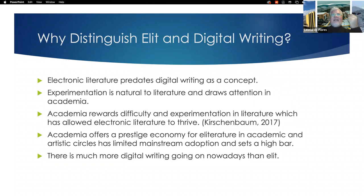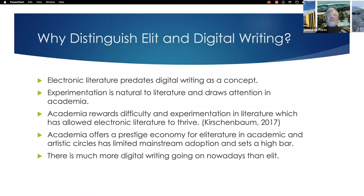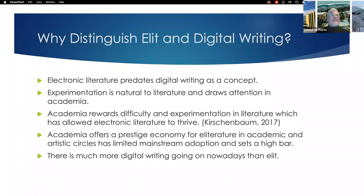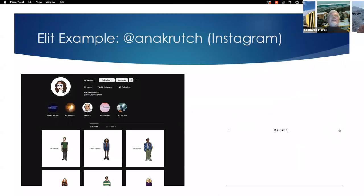Experimentation is natural to literature and draws attention in academia. Matthew Kirshenbaum made this excellent point in a keynote at the ELO conference in Porto, Portugal in 2017 — academia rewards difficulty and experimentation in literature, which has allowed electronic literature to thrive. Academia offers a prestige economy for e-literature in academic and artistic circles, but that has limited mainstream adoption and sets a very high bar. These are circles not easy to get into. There is much more digital writing going on nowadays than electronic literature because it is massive.